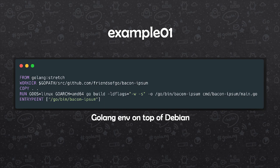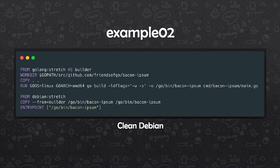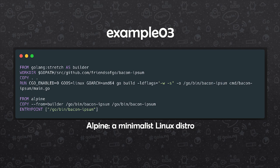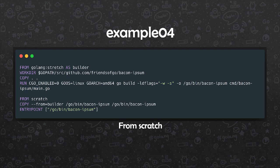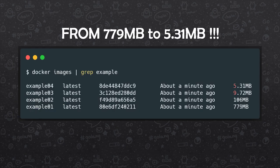In this example, we have Dockerized an application called Bacon Ipsum — it's like a Lorem Ipsum generator, but a bit funnier. In this case, we are compiling our application and running the binary on top of an image that contains all the Golang development environment on top of Debian. Since we only need the binary, we don't need the development environment, so we can just run from Debian. We don't even need a large distribution like Debian, so we can run it from a minimalist Linux distribution like Alpine. If we go further, we can run our application from scratch. In terms of size, we have reduced the image size from 729 megabytes down to 5.31 megabytes.